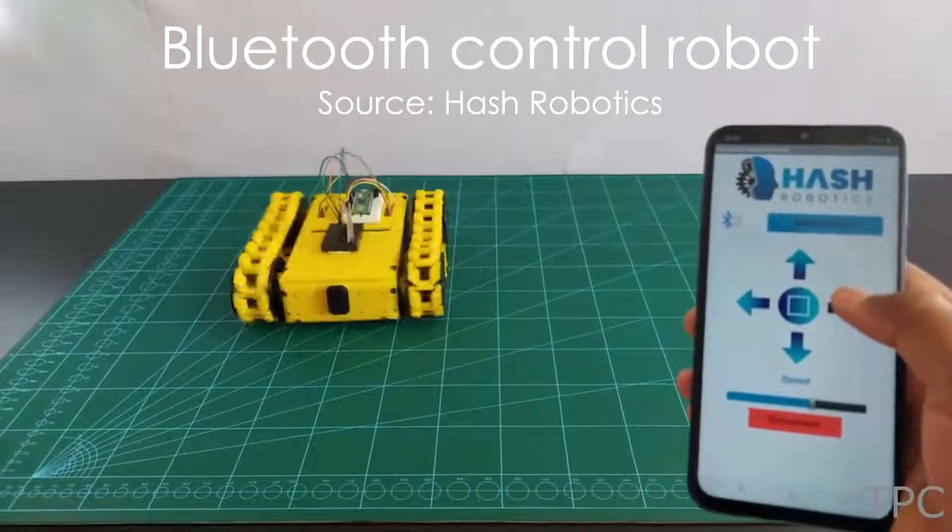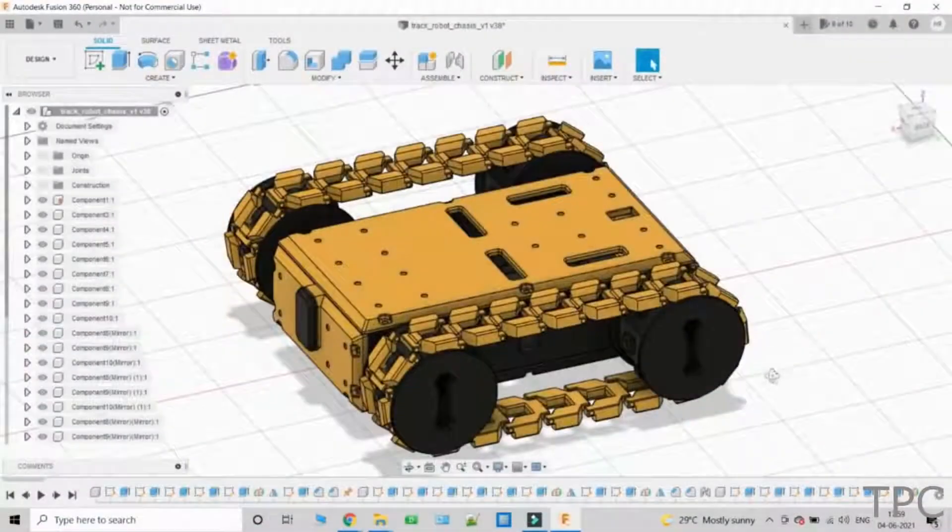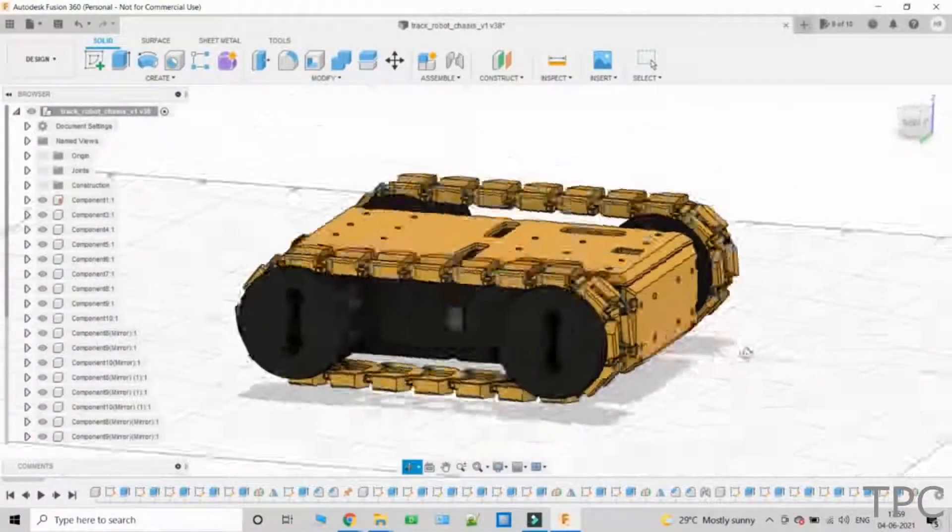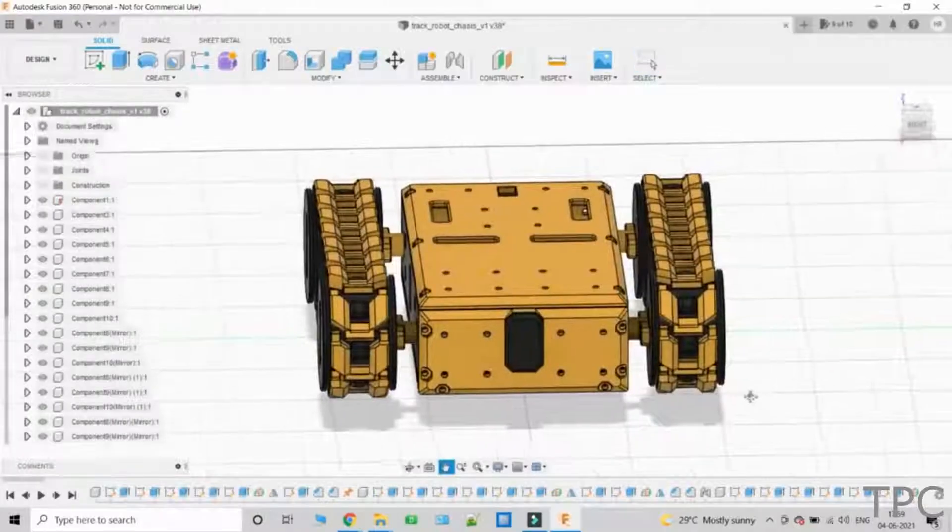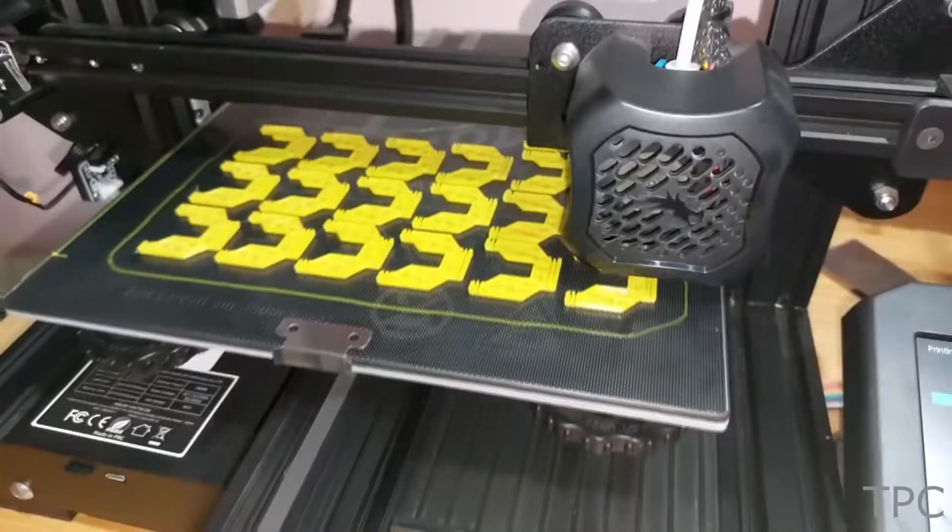This is a bluetooth handheld controlled robot. Here is the 3D design of the robot chassis. Looks cool right? After the design it's time to print and assemble the chassis.